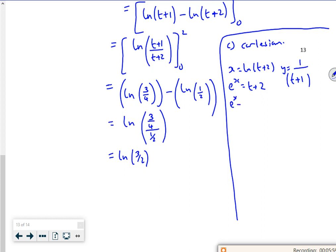So I'm going to replace e to the x minus 2 with t. So y is 1 over e to the x minus 2 plus 1. y is 1 over e to the x minus 1. Done. Dusted.